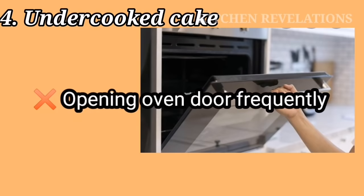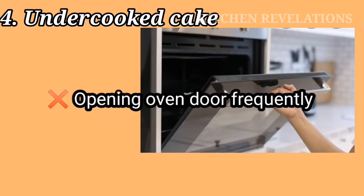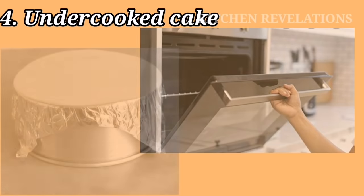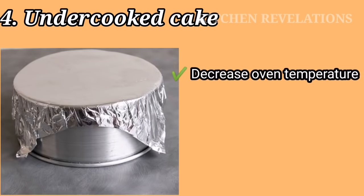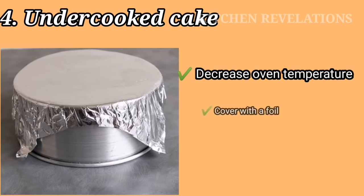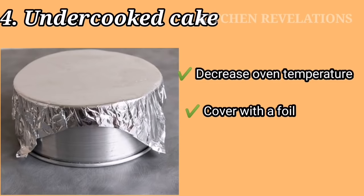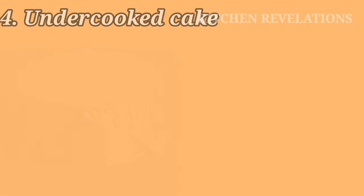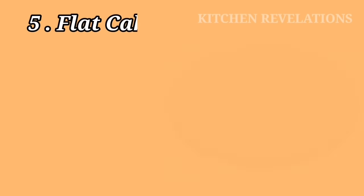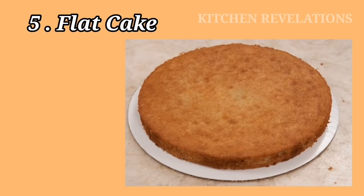The next mistake is an undercooked cake. As explained earlier, this can also happen when you open the oven door very frequently. There is a trick to save your undercooked cake: decrease the oven temperature by 20 to 25 degrees Celsius, cover the top portion of your cake with foil, and continue to cook for a few minutes until a toothpick inserted through the middle comes out clean.